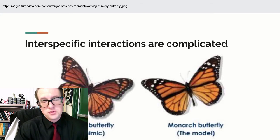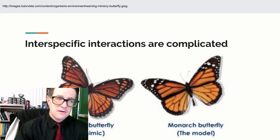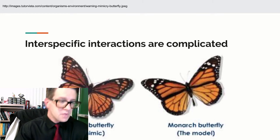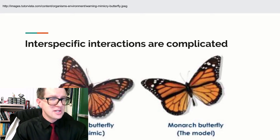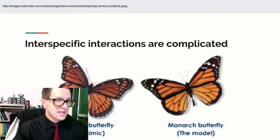And the benefit that the viceroy butterflies have is they don't get eaten because other organisms mistake them for being monarchs. So we have one form of mimicry where one organism is harmful and the other mimics it to hope that it doesn't get hurt.